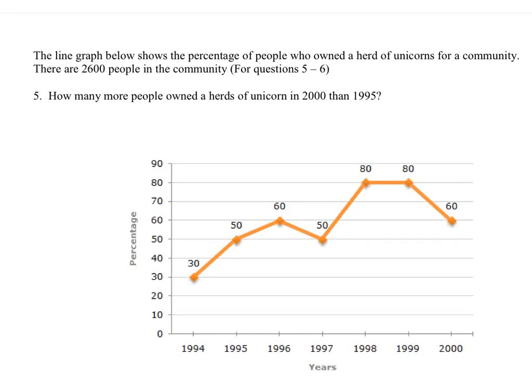The line graph below shows the percentage of people who owned a herd of unicorns for a community. Sounds interesting. There are 2,600 people in the community, so we'll use—I don't know if we need it for six, but five certainly.